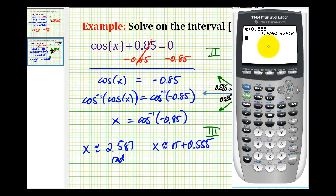So the second solution is going to be approximately pi plus 0.55 radians, which gives us approximately, which is equal to approximately 3.697 radians.